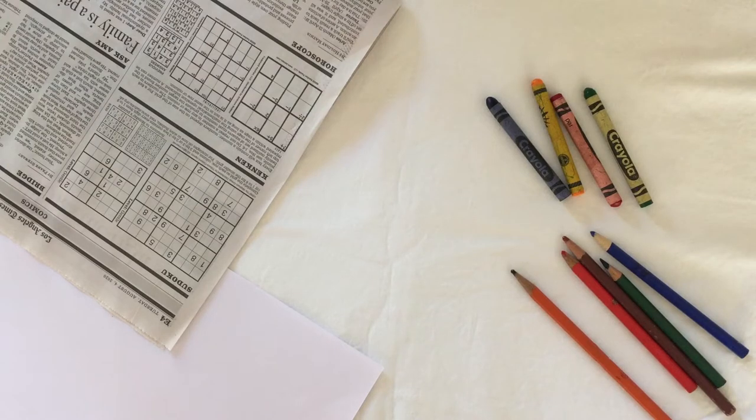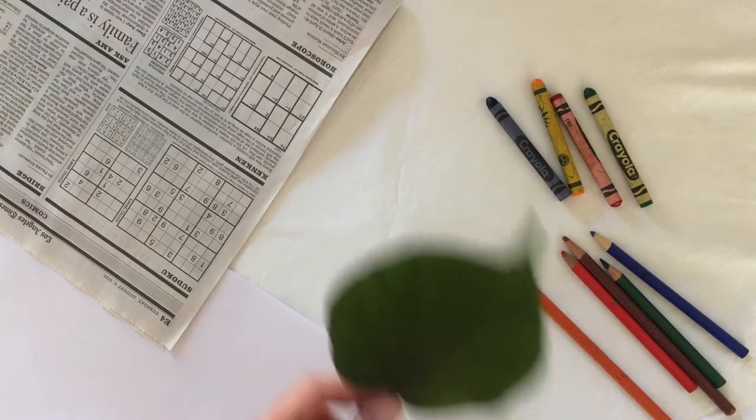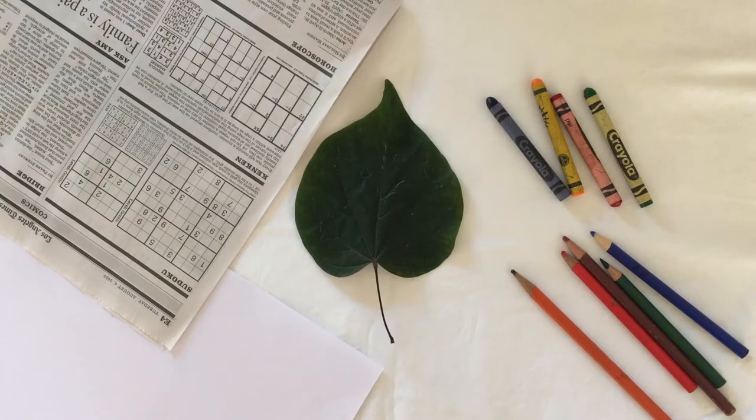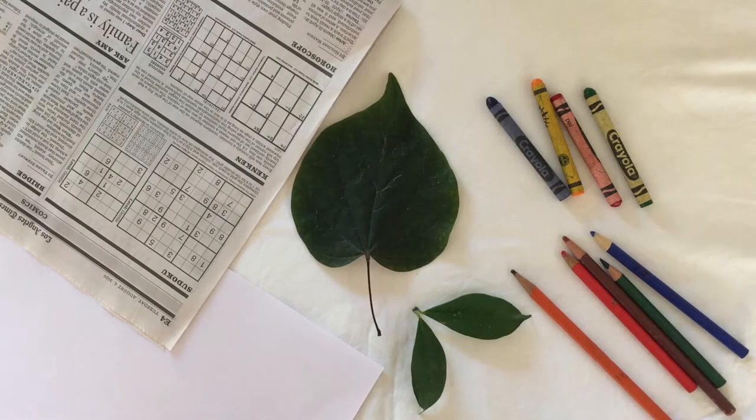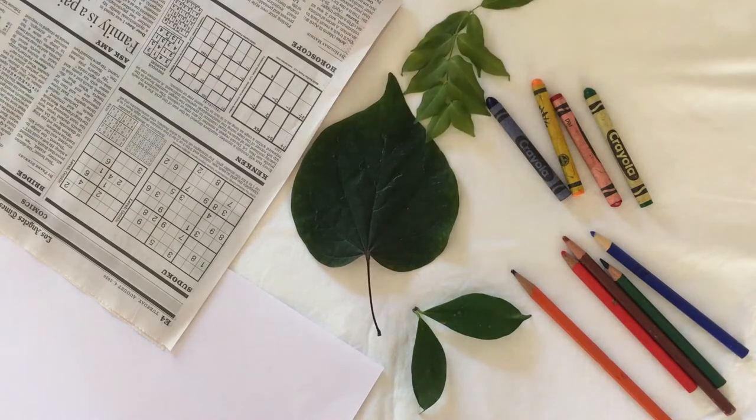Finally, our fourth material we need are the objects that we are going to print. We are going to print objects that we find in nature in our neighborhood. We are going to look for leaves, grass, or flowers.